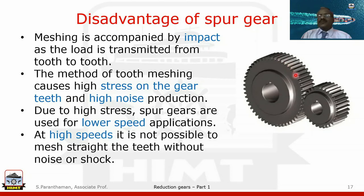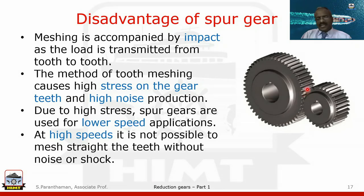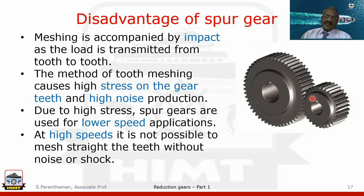The disadvantage of spur gear is that meshing is accompanied by impact load — all of a sudden the entire load is transmitted onto a complete gear tooth with no smooth transition. This causes high stress on the gear teeth and high noise production. Due to high stress, spur gears are used for lower speed applications. At high speeds, it is not possible to mesh straight teeth without noise or shock, so spur gears are generally not preferred for high speed applications.